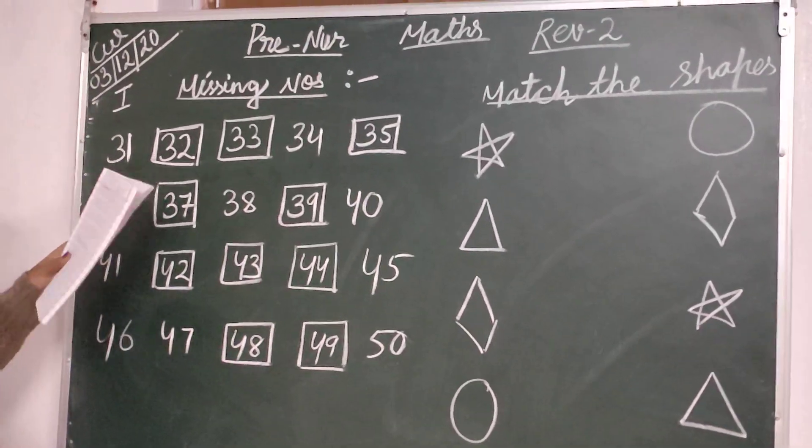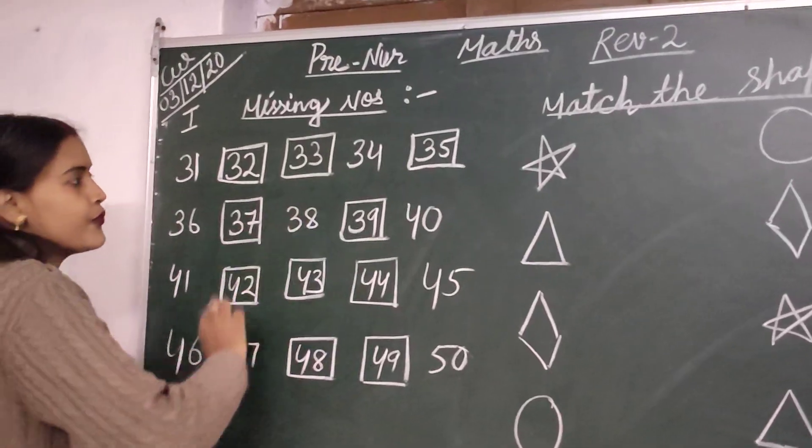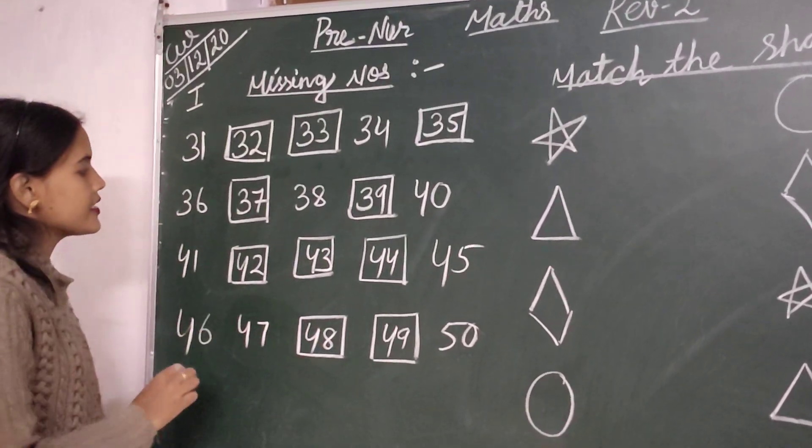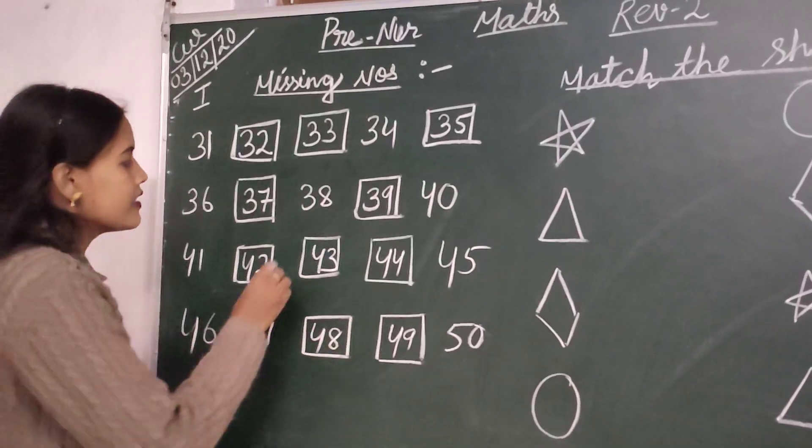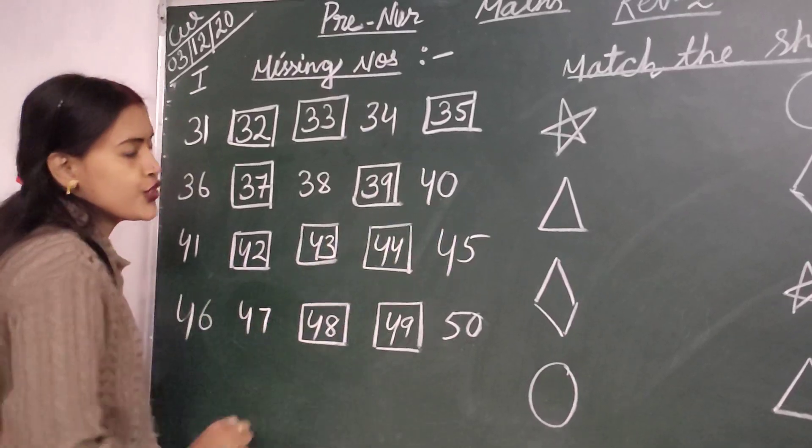So children, once again: 31, 32, 33, 34, 35, 36, 37, 38, 39, 40.